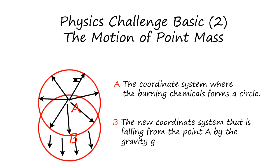Physics challenge basic to the motion of point mass. The assumption here is first the firework explodes in the center and flies around with r equals Vr*n. This n is the radiating direction from this origin coordinate system.